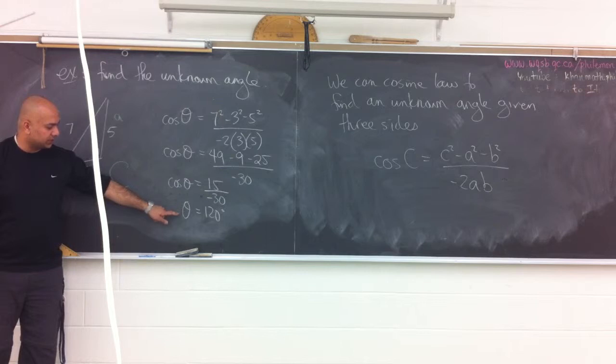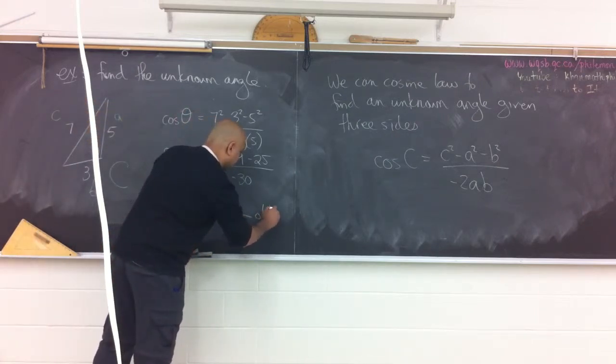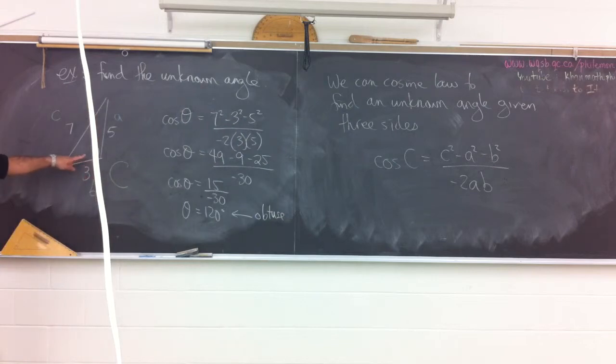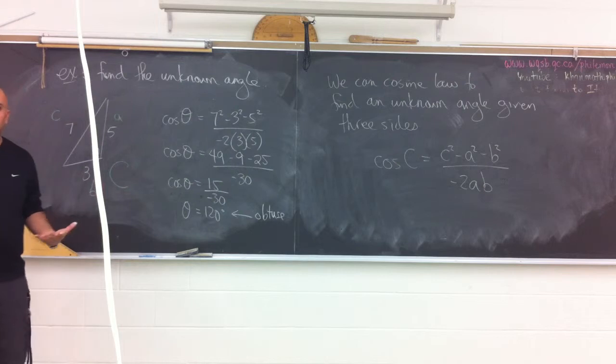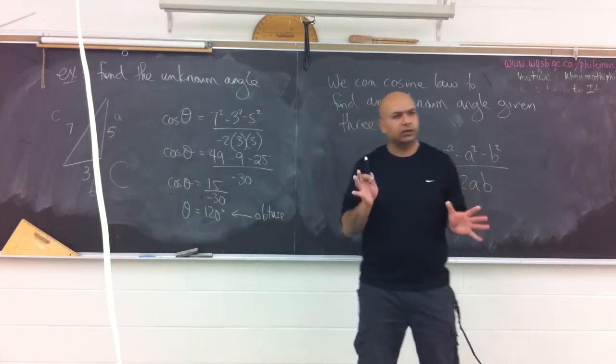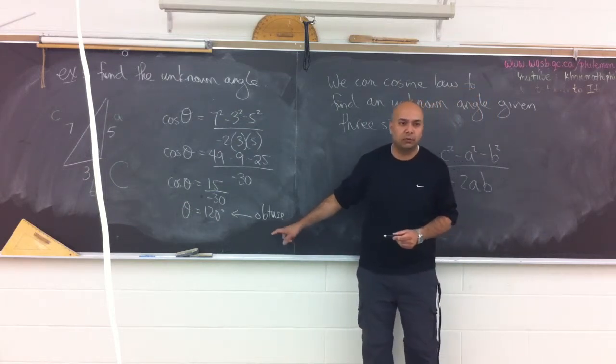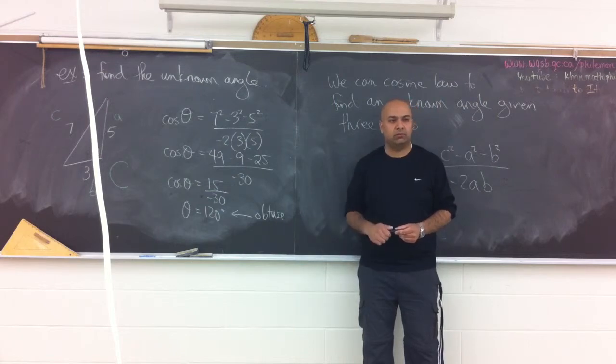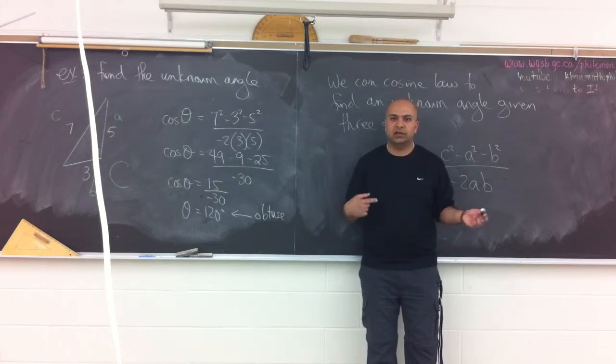Right before we finish, there's two things I want to say. It's important to note that we just got an obtuse measurement. This is obtuse. And we look at our triangle and it makes sense. There's a huge difference between cosine law and sine law. When you use sine law to find an angle of measurement, your calculator will always give you the acute angle. It'll never give you the obtuse. It was up to us to figure that out. Cosine law will always give us the acute or the obtuse, depending on what we're looking for. Why?